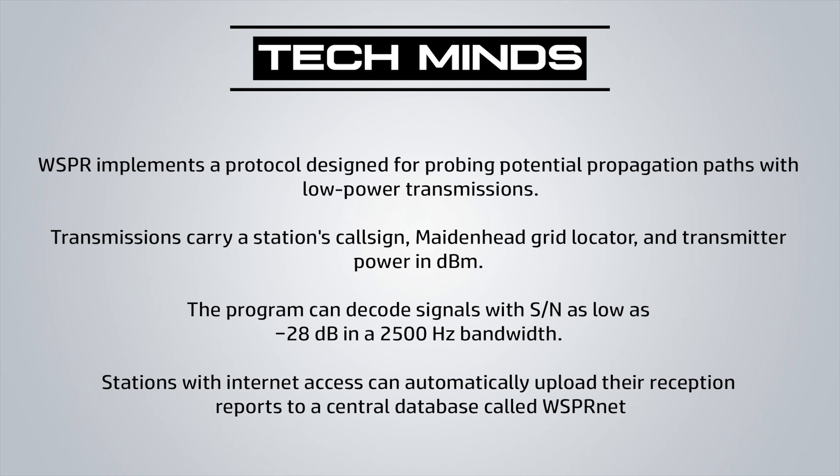The transmission carries a station's call sign, Maidenhead grid locator, and the transmitter power in dBm. The receiving program can decode these signals with a signal-to-noise ratio as low as minus 28 dB within a 2500 Hz bandwidth. Stations receiving and decoding WSPR signals around the world are also able to upload their reception reports to a central database called WSPRnet.